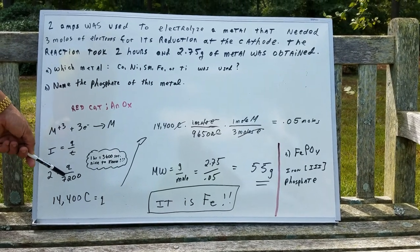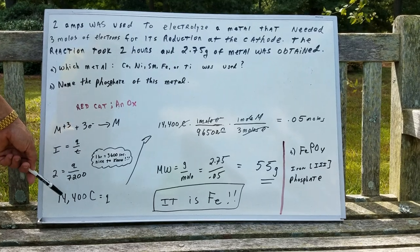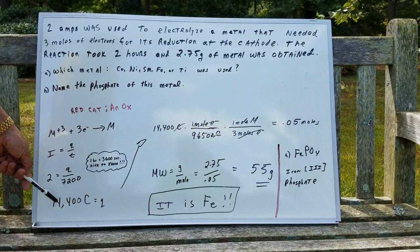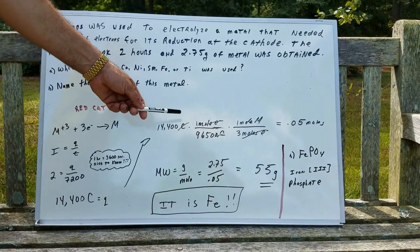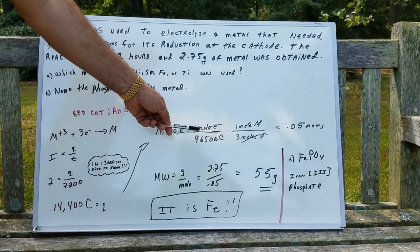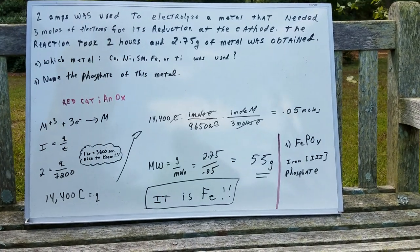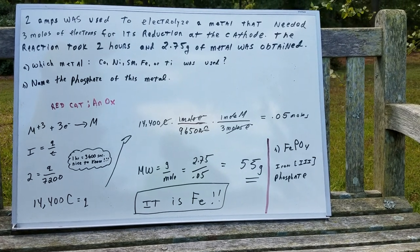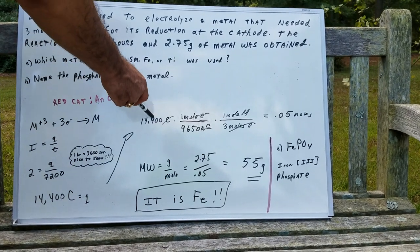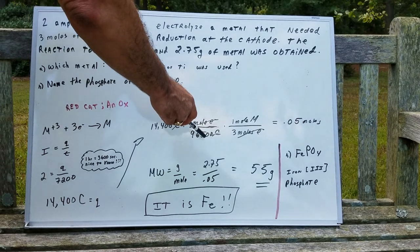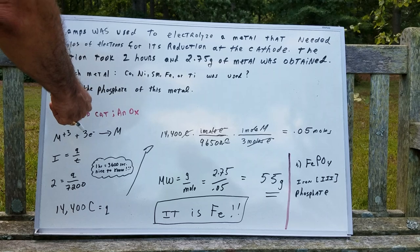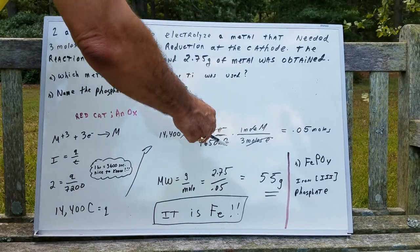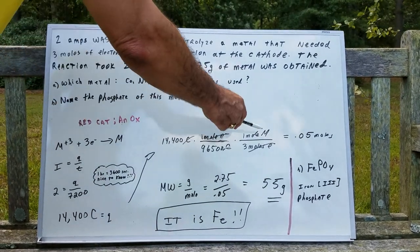So I plug in. The current is 2. The time is 7,200 seconds. That gives me 14,400 coulombs of charge. Now, that'll give you the conversion. A mole of electrons is 96,500 coulombs. So what I've done is I use this conversion. One mole of electrons is 96,500 coulombs. And as you can see from this reaction, three moles of electrons is for one mole of M.